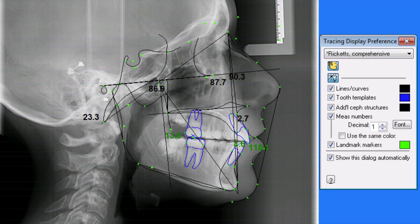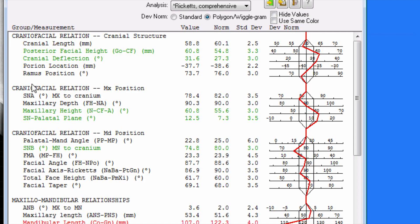For example, if you like the traditional measurements like the SNA, SNB. SNA tells you the maxillary position, SNB tells you the mandibular position to the cranium. And then you have the FMA, which is your skeletal deep bite-open bite. You can tell this patient is pretty close to normal.